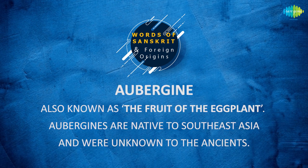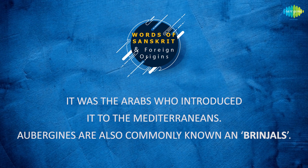Aubergine is also known as the fruit of the eggplant. Aubergines are native to Southeast Asia and were unknown to the ancients. It was the Arabs who introduced it to the Mediterranean. Did you know that aubergines are also commonly known as brinjals? Bet you didn't know that!